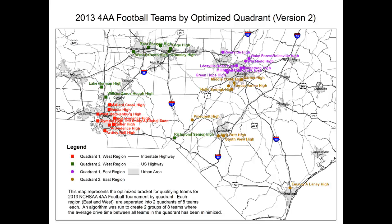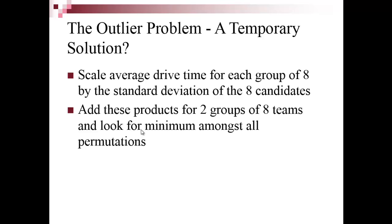I looked at ways to address this outlier problem. Based solely on drive time, the average between the green schools is 65 minutes, the red schools 21 minutes, the purple schools 20 minutes, and the brown schools about 63 minutes. To fix the outlier, I scaled the drive time for each group of eight by the standard deviation of the eight candidates — using a multiplier for standard deviation in addition to average drive time.